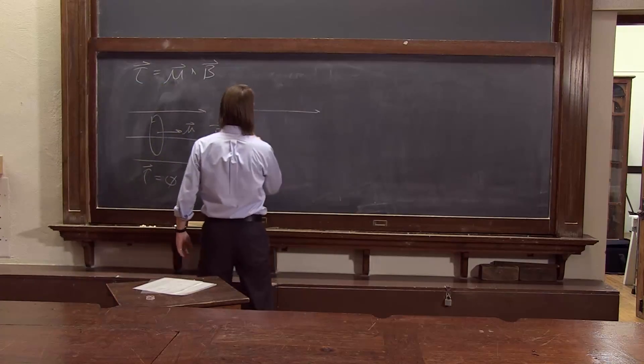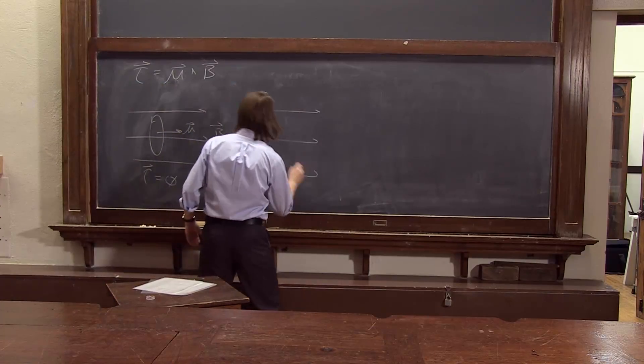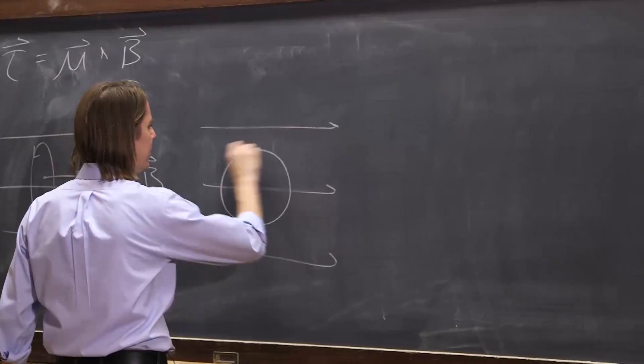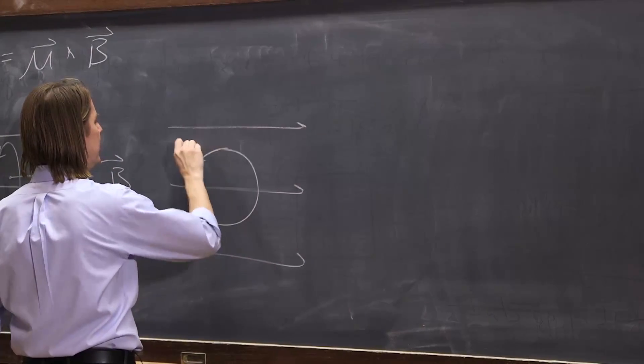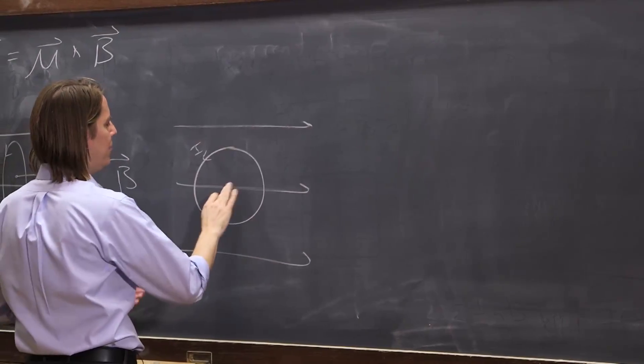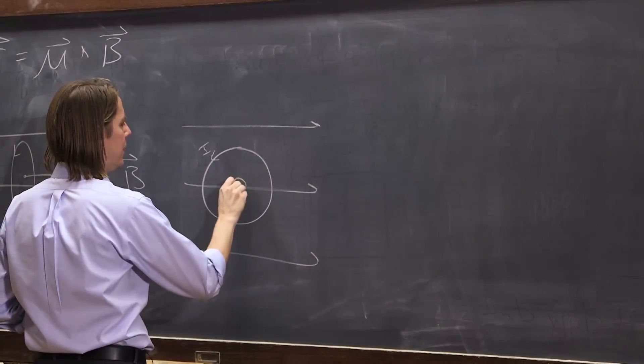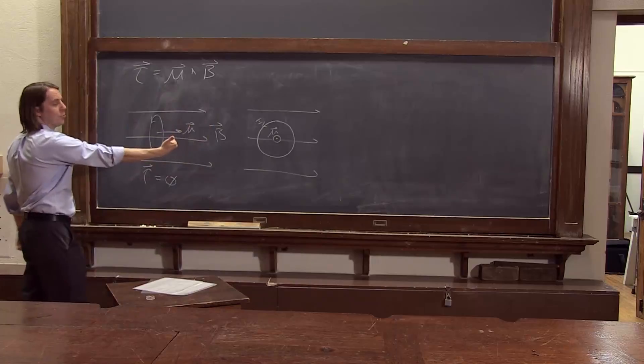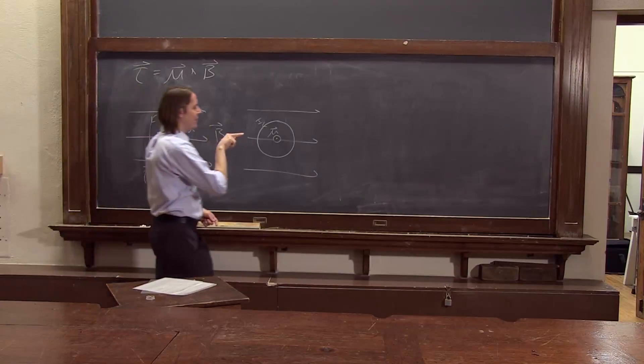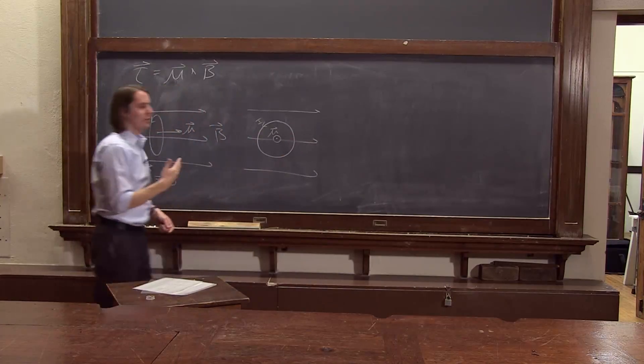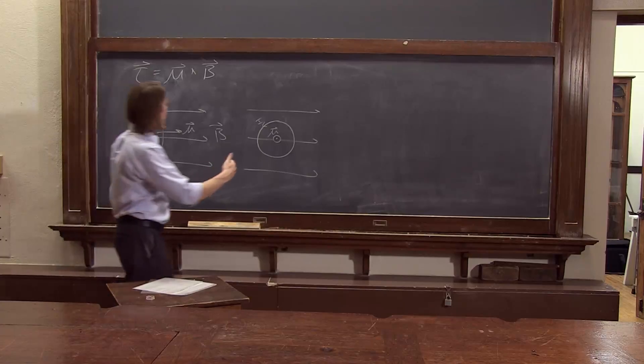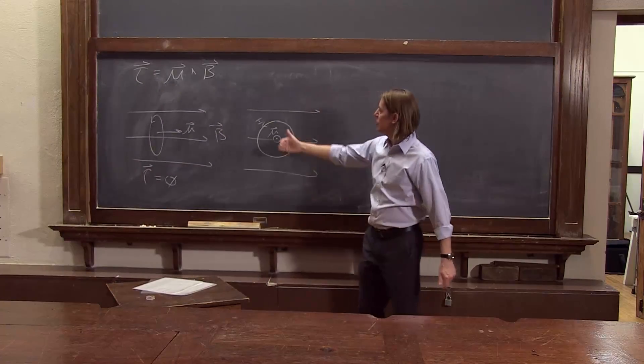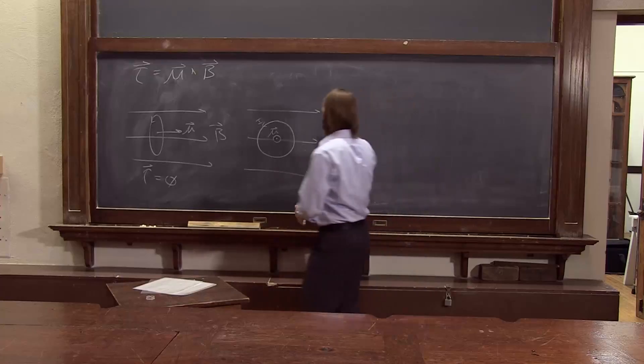We could also think about the case where it's in the plane of the board. Current's going around like that, so I'm going to draw the moment as sticking out. By the right-hand rule, the moment is sticking out. The B field is that way. We do have a torque. Which way? μ cross B. So μ is out, B is to the right, so we have a torque up.